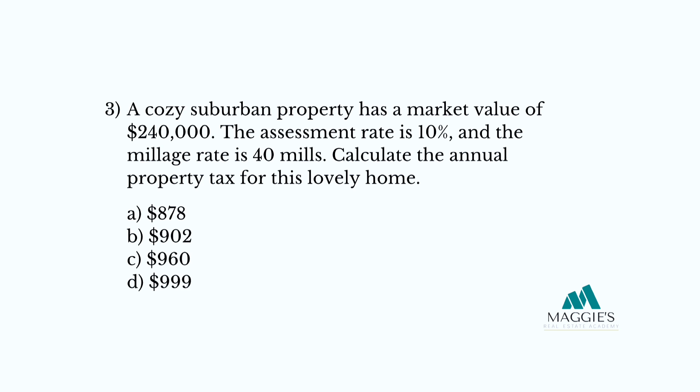Let's try another one. Question number three: a cozy suburban property has a market value of $240,000, the assessment rate is 10%, and the millage rate is 40 mills. Calculate the annual property tax. Step 1: convert 10% into a decimal — 10 divided by 100 equals 0.10. Step 2: multiply the market value. $240,000 times 0.10 equals $24,000.